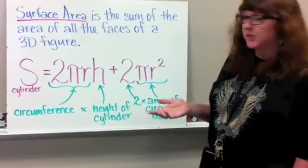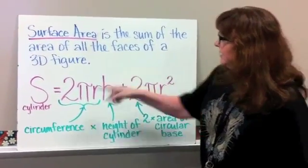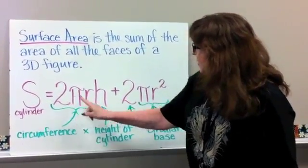And we're dealing with cylinders today. So basically your formula for finding the surface area of a cylinder is going to be the surface area of a cylinder is 2πrh,